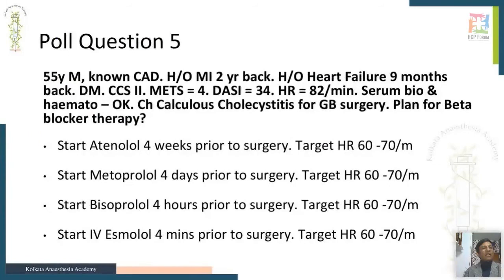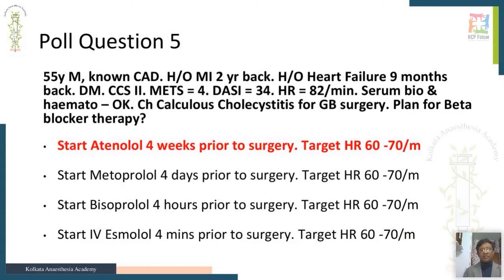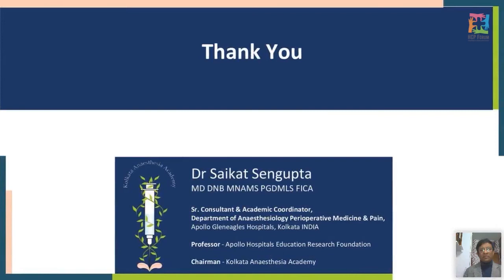Poll answer 5 (beta blocker timing): The patient has an RCRI score of approximately three going for major surgery and needs heart rate control. The drug choice doesn't matter as much as the target. Atenolol started four weeks prior to surgery — reaching a target heart rate of 60–70 — is the ideal approach. Starting too close to surgery (hours or minutes before) is not recommended per the POISE study data.